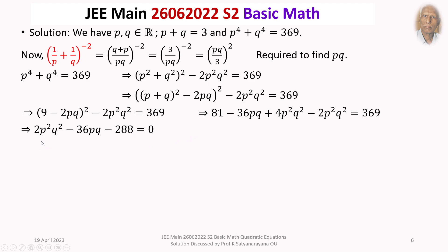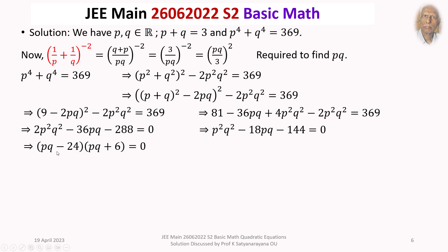Observing that 2 is common throughout, we divide by 2 to get P²Q² minus 18PQ minus 144 equals 0. This is a quadratic equation in PQ, and the factorization is straightforward: (PQ minus 24)(PQ plus 6) equals 0. So PQ equals 24 or PQ equals minus 6.